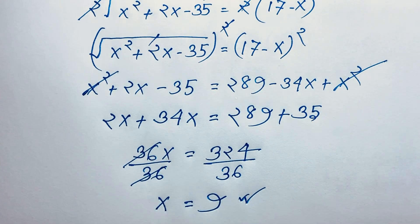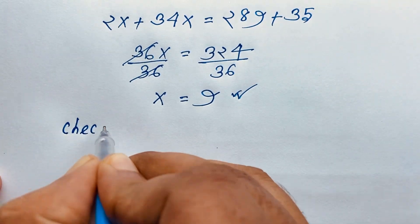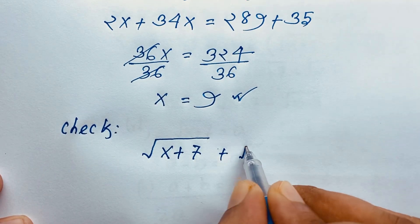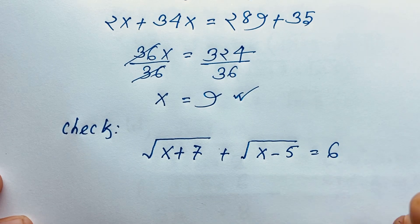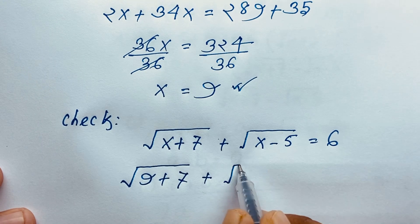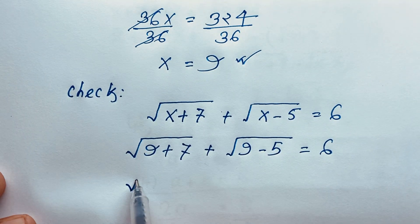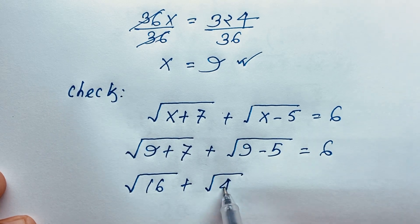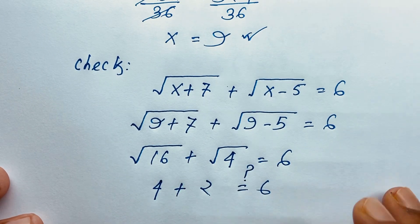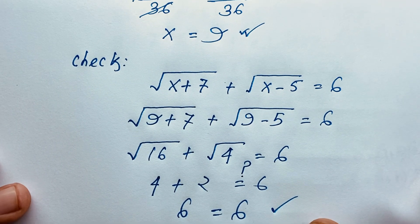Now let's check our answer. The original equation is √(x+7) + √(x−5) = 6. Substituting x = 9: √(9+7) + √(9−5) = √16 + √4 = 4 + 2 = 6, which equals 6. Left-hand side equals right-hand side, so our final answer x is equal to 9 is confirmed.